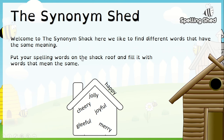You put one of your spelling words on the shed roof, and then you try and fill it with as many words as you can that mean the same — that are synonyms of that word. For example, you've got happy on the shed, and synonyms of happy would be jolly, cheery, joyful, gleeful, merry. So you are going to do that, but with your spellings.